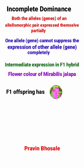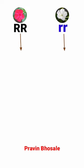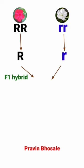Let's see by representation: parents are red flower (RR) and white flower (rr). Gametes will be capital R and small r. The F1 hybrid is capital R small r, that is, a pink flower.